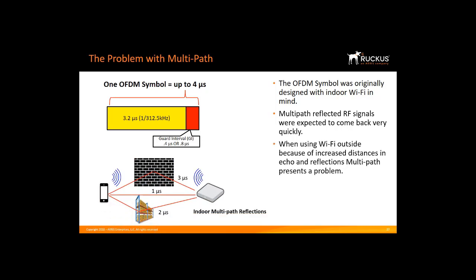When using Wi-Fi outside, because of increased distances in echo and reflections, multipath presents a problem. Long OFDM symbol helps to correct this problem.